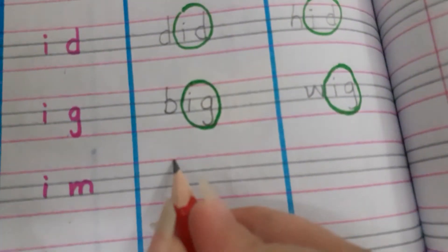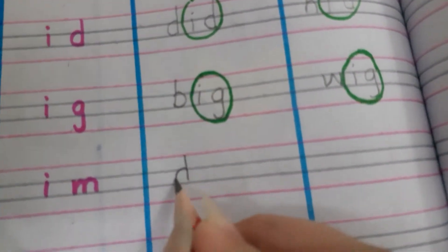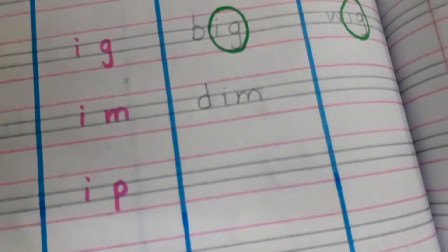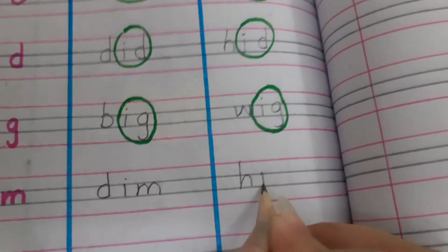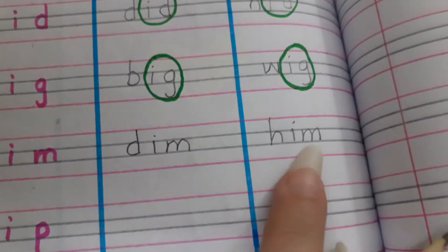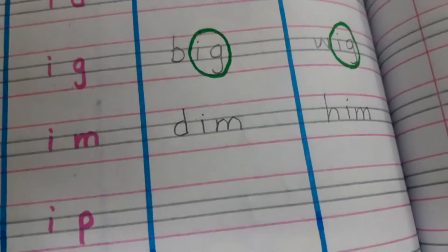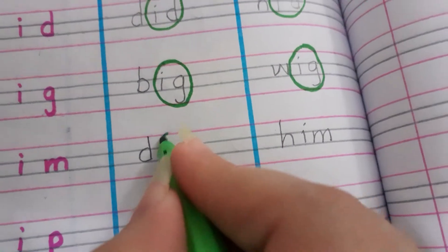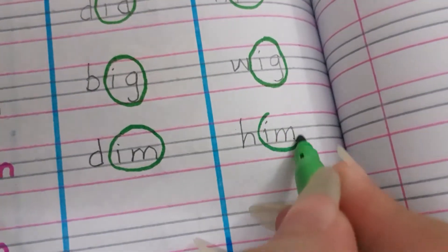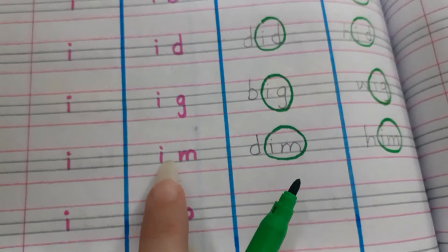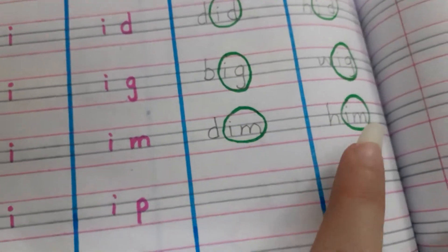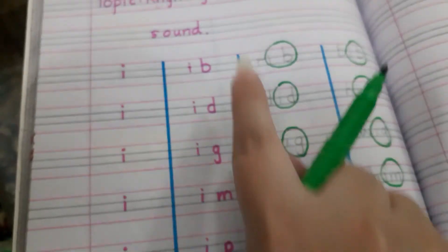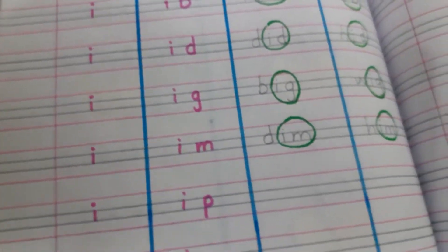Next, im. The rhyming words of im are dim and him. We use him for boys. Let's circle it. Im, im, im. Dim, him. So one, two, three, four - we have done four. Let's move on again.